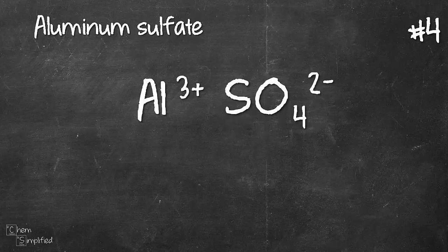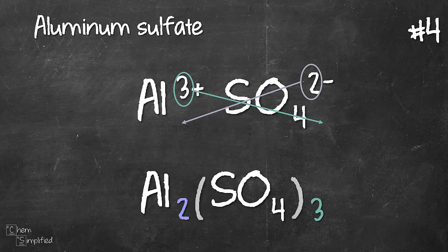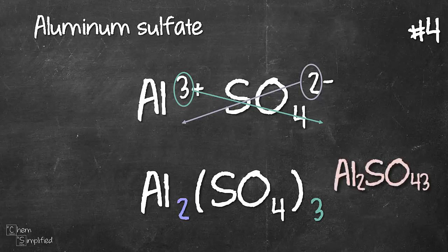So we do the same method which is cross over the charges and write it out. So we have Al2, SO4 and then there's a 3, right? Notice that I just inserted the bracket. The bracket is necessary because when I cross the 3 from aluminum over to SO4, it meant 3 units of SO4. So that means I need to somehow indicate that I have 3 of the SO4 and that's where the bracket comes in. Otherwise, if I don't have the bracket, it would read Al2SO43 and that's ridiculous because it doesn't exist. So don't forget to put in that bracket, okay?